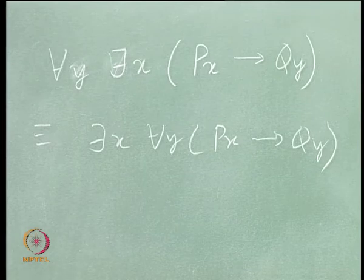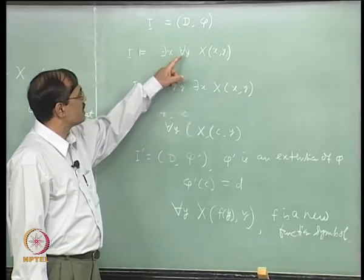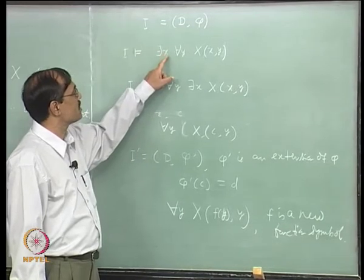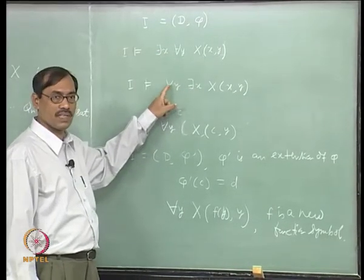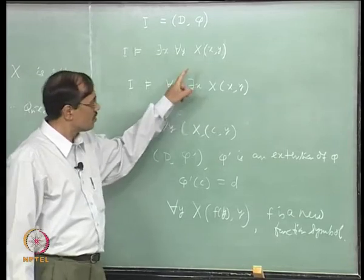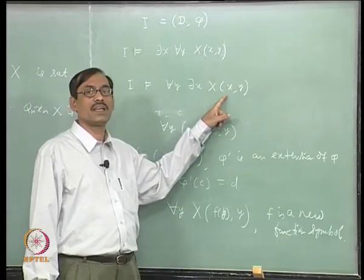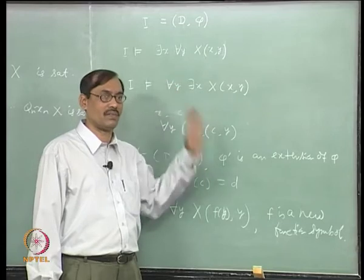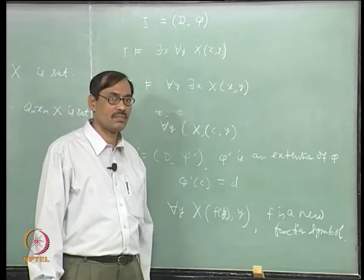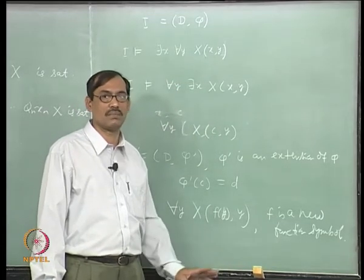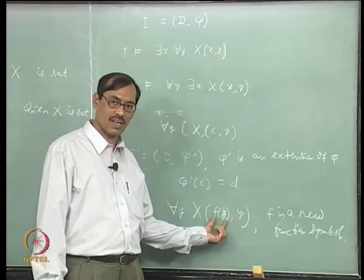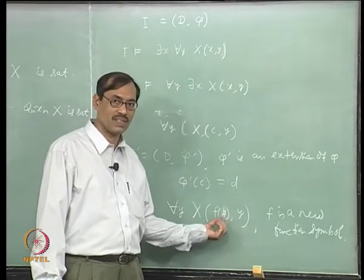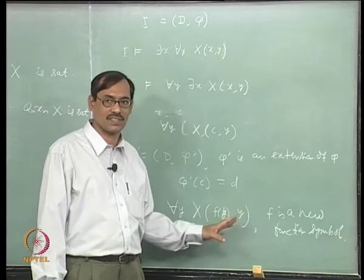So, we must check: even if there is ∃x and some quantifier ∀y before it, we must check whether there is a predicate involving both x and y simultaneously. If not, x does not depend on y. For the function symbol, whether it is a new constant or a function symbol, they are all functions. The question is whether you want to write f(y) or just a constant.